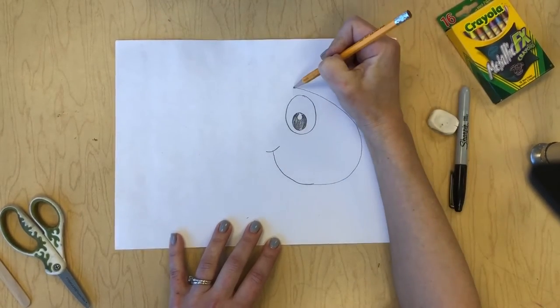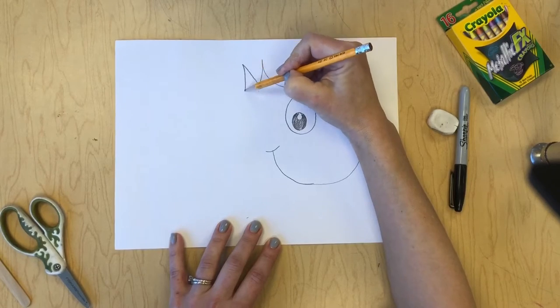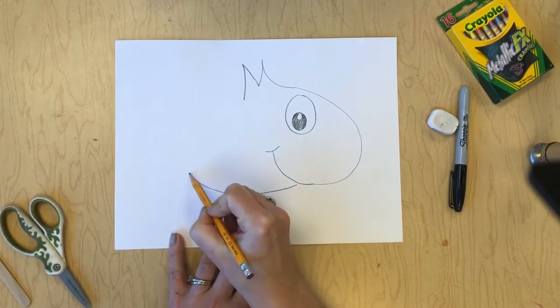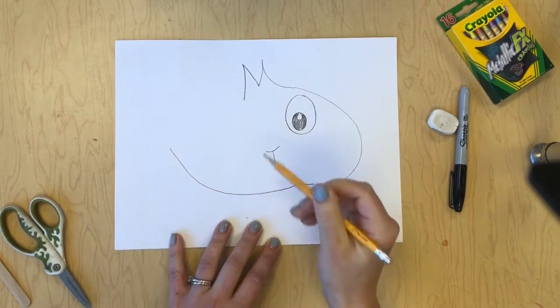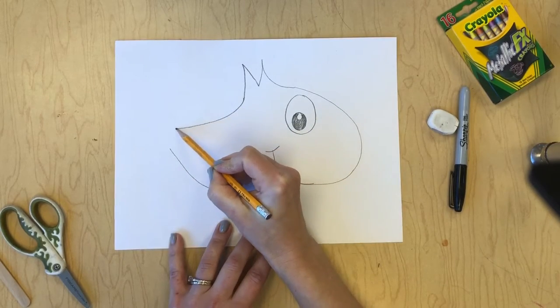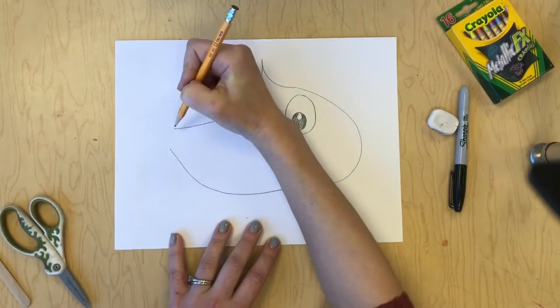Now we're going to give our fish some fins. I'm going to use an M shape on top for its top fin and a long U to finish off his body. Make sure you leave a little space here for his tail.